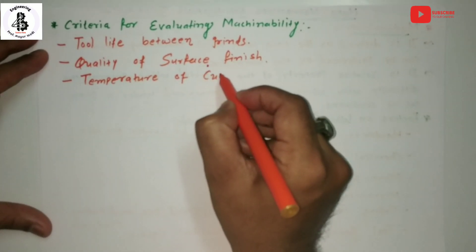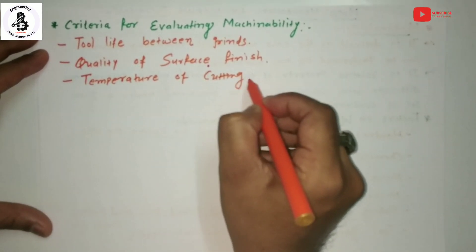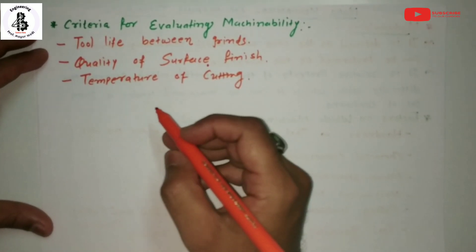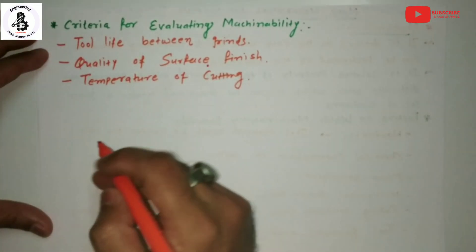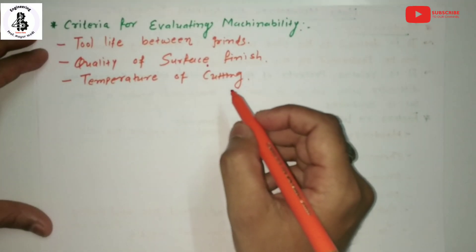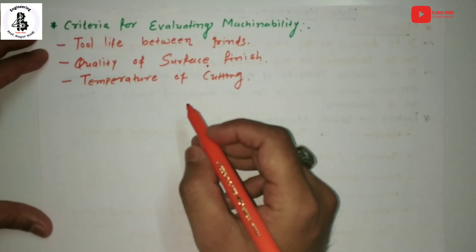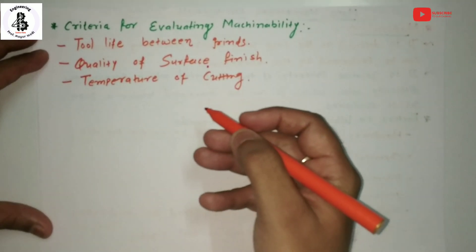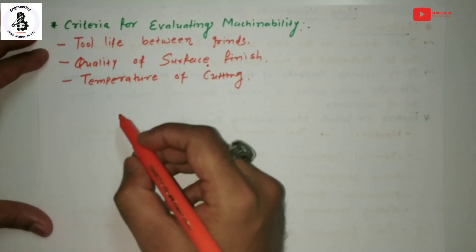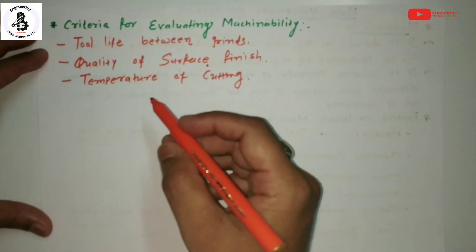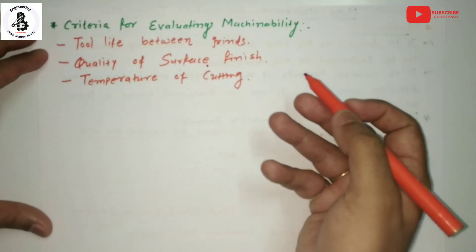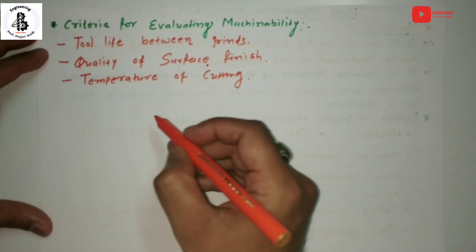Another criterion is the temperature of cutting. In conventional machining, the tool and workpiece are always in physical contact, generating heat due to high friction between the tool tip and workpiece surface. The amount of temperature developing between the tool and workpiece is also an evaluating criterion for machinability.